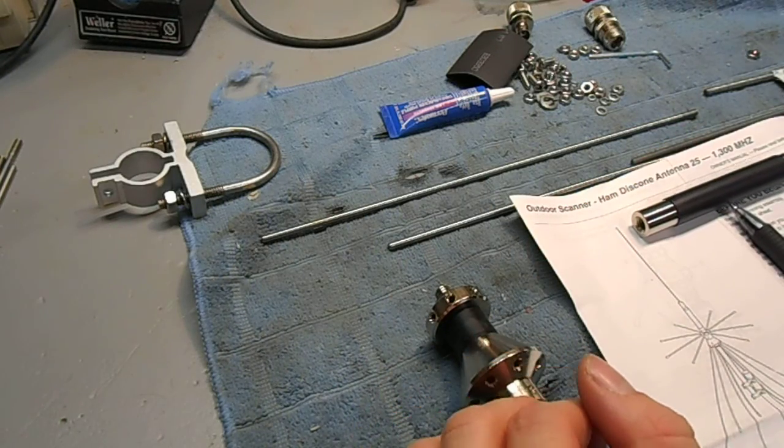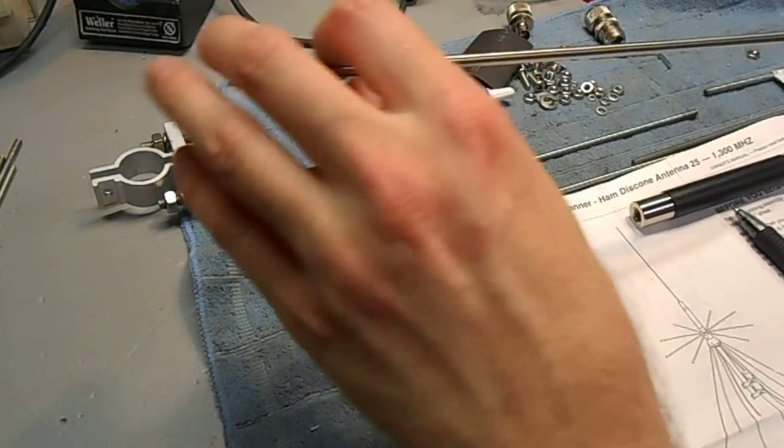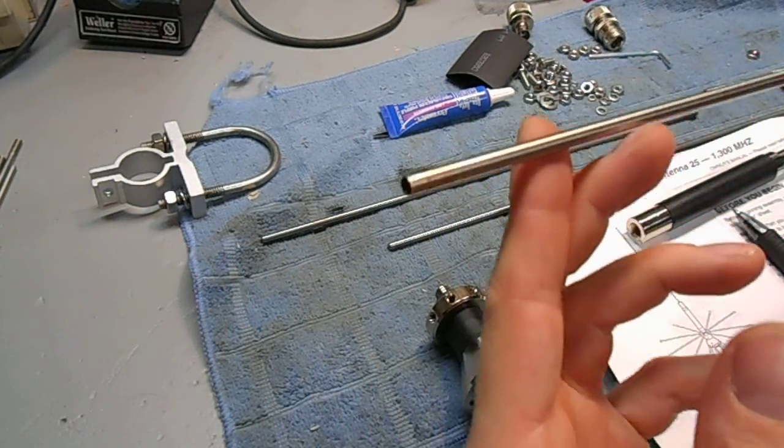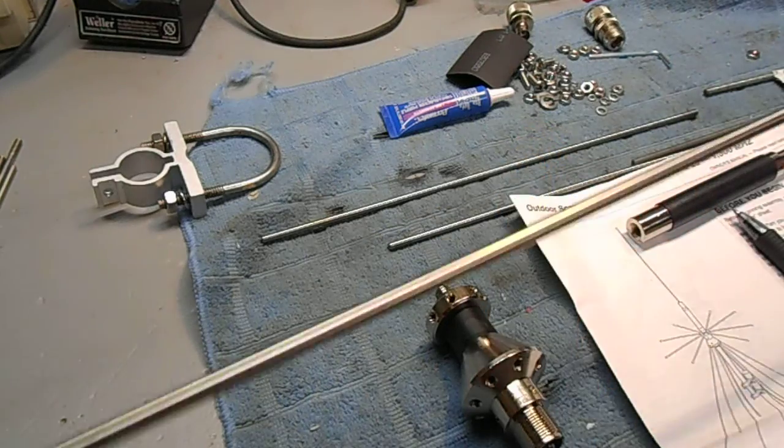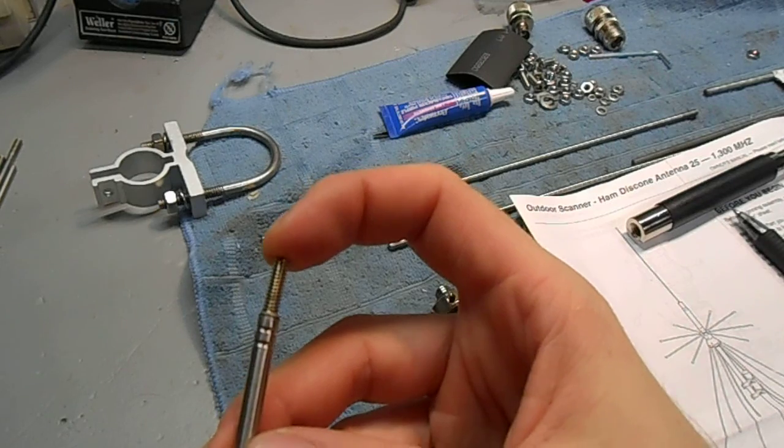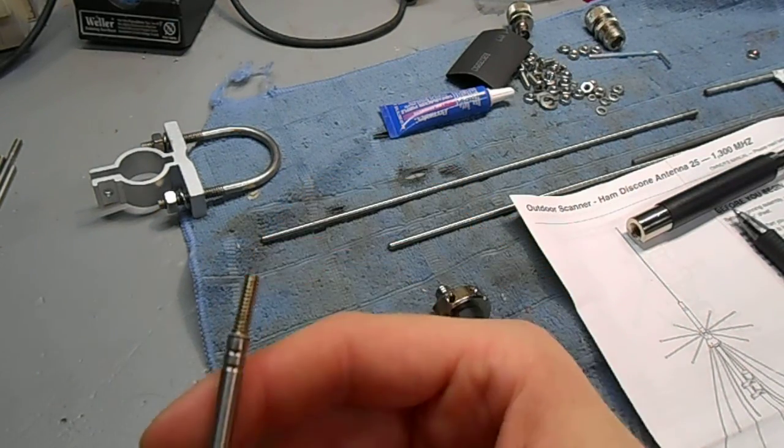Probably the biggest drawback for the antenna is the cone elements use stainless steel tubing. And they have these little crimp connectors, threaded inserts, that they crimp into the tubing.